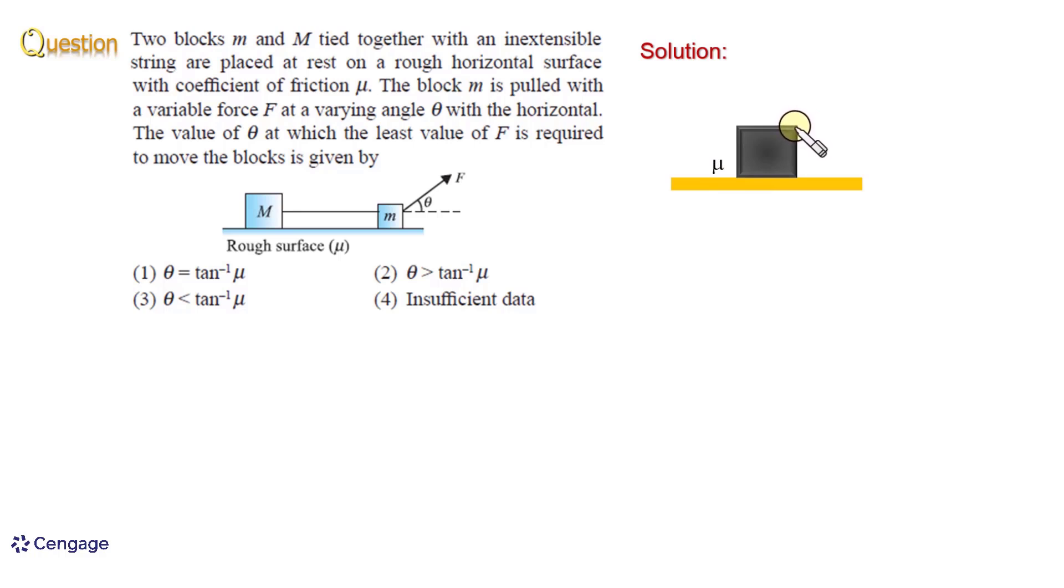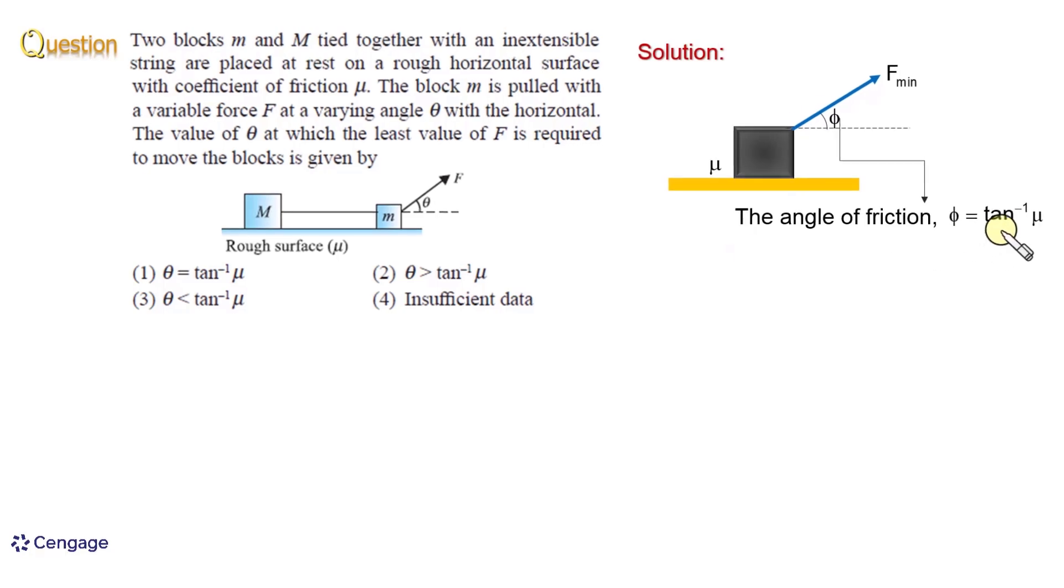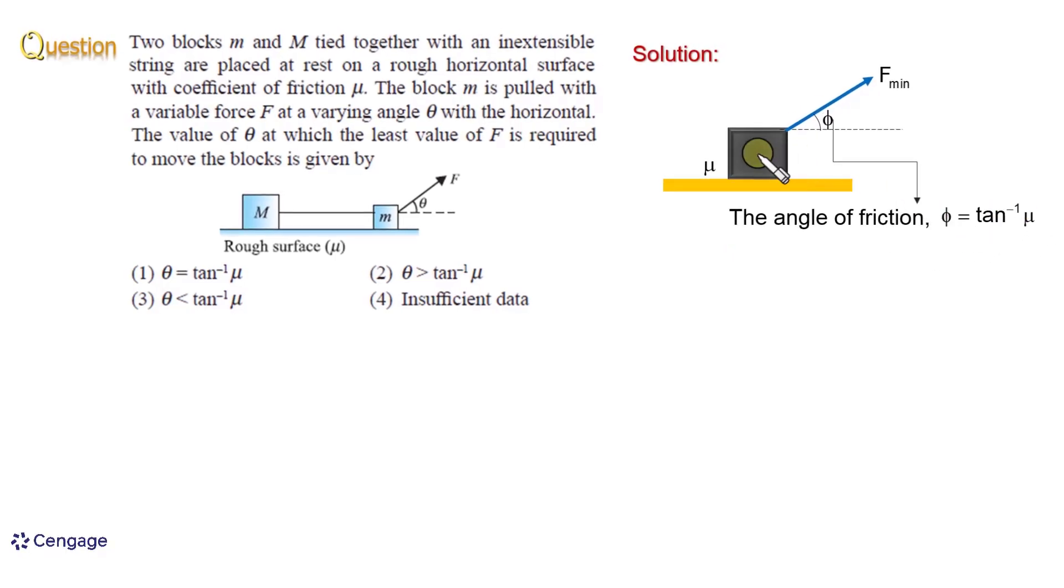If we apply the force F minimum at angle phi with the horizontal, and this phi should be equal to the angle of friction, then only we can move this block by applying the least force. So phi should be equal to tan inverse mu. We can observe this angle of friction is independent of mass of the block.